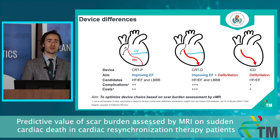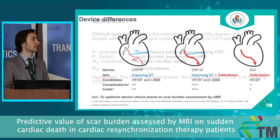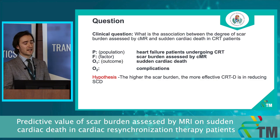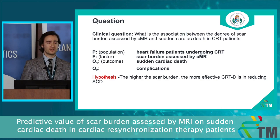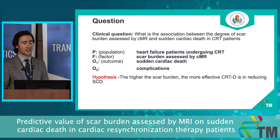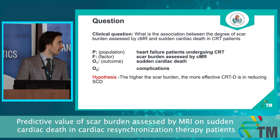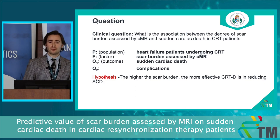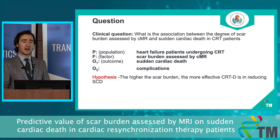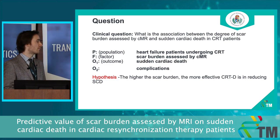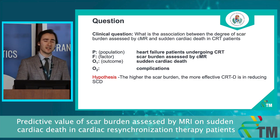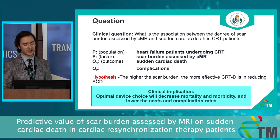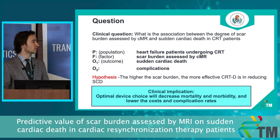Not everybody will benefit from a CRT-D, which is a combination of the two devices. Our aim is to optimize device choice based on scar burden assessed by cardiac MRI. Our clinical question is: what is the association between the degree of scar burden assessed by cardiac MRI and sudden cardiac death in CRT patients? Our population is heart failure patients undergoing CRT, our prognostic factor is scar burden assessed by MRI, and our outcome is sudden cardiac death and complication rates. Our hypothesis is that the higher the scar burden, the more effective CRT-D is in reducing sudden cardiac death.